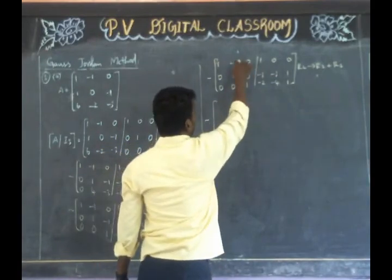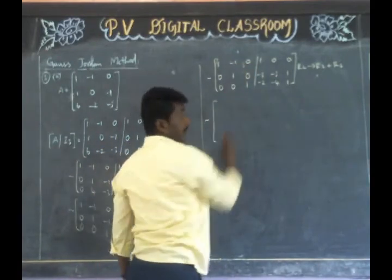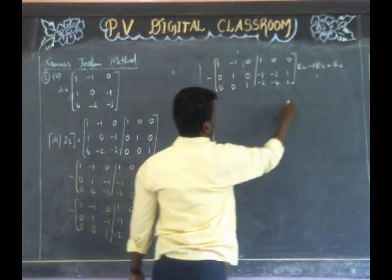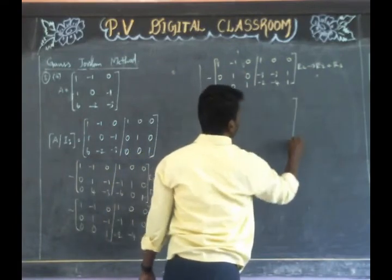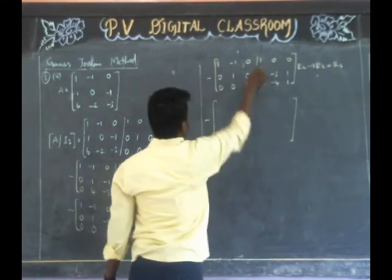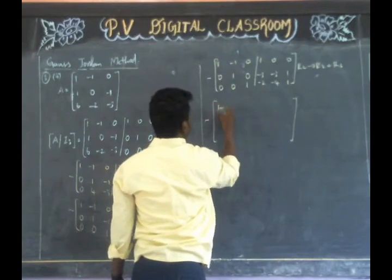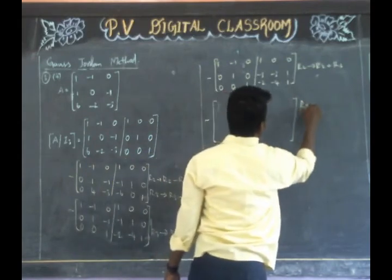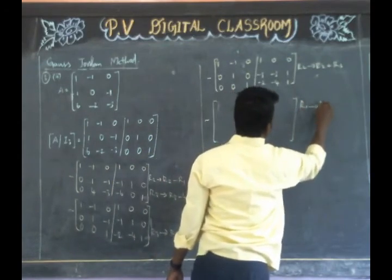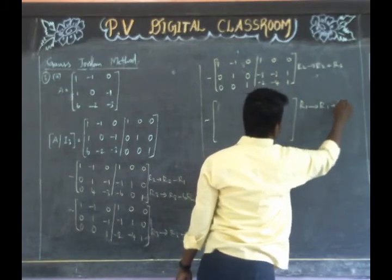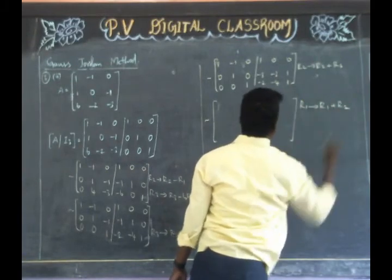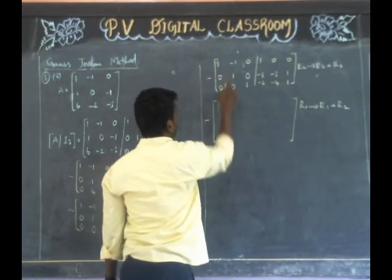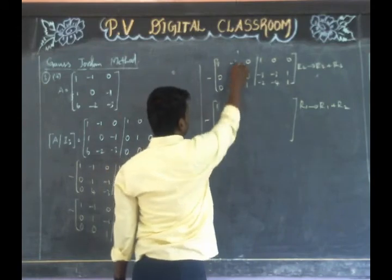Let's add R1 and R2. R1 gives R1 plus R2. What do we need? 1 plus 0 is 1.